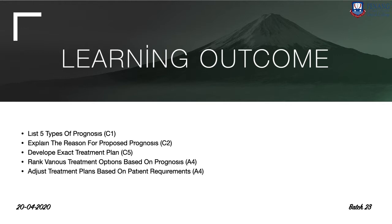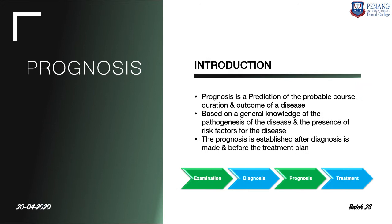What is prognosis? Prognosis is basically a prediction of the probable course, duration, and outcome of a disease. It is predicting how the disease will progress, how the treatment will change the progression or outcome of the disease. Prognosis is based on general knowledge of the pathogenesis of the disease and the presence of risk factors. It is established after diagnosis and should be done before the treatment plan, to guide proper treatment and achieve a better outcome.